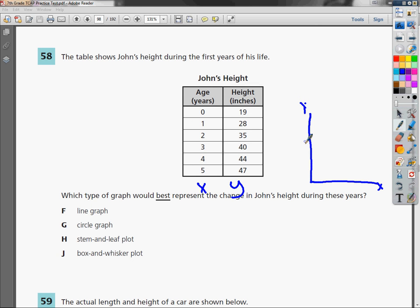A line graph would be a great way to show height versus age. If we put the age down here, we could show that he's getting a little taller each time. So the line graph is a pretty good bet.